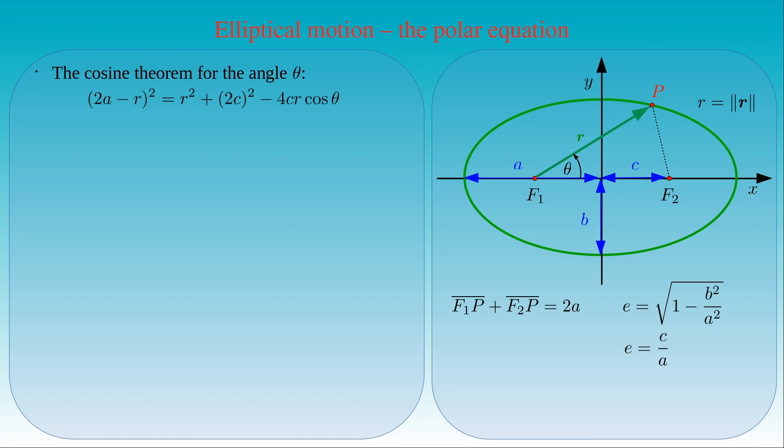By calculating the square of the left-hand side of the equation, we obtain 4 times A squared, minus 4 times A times R, plus R squared. This is equal to R squared, plus 4 times C squared, minus 4 times C times R times cosine theta.